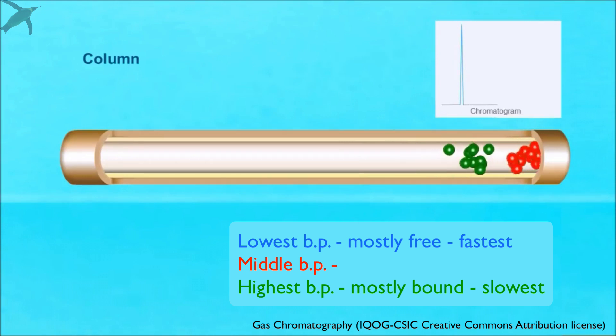As the compounds exit the column, the detector picks up the signal, which is sent to the computer and plotted in the gas chromatogram.